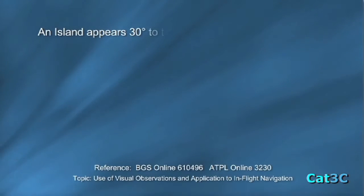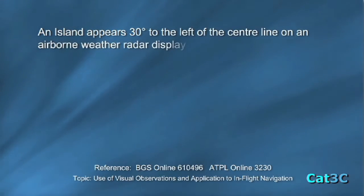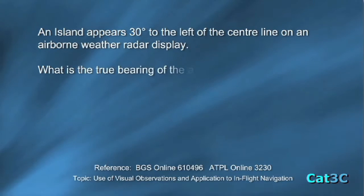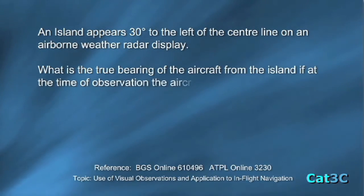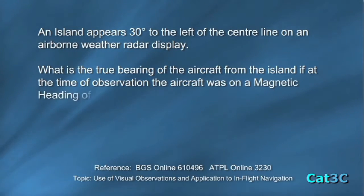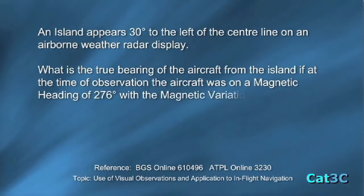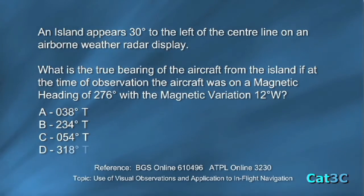An island appears 30 degrees to the left of the centre line on an airborne weather radar display. What is the true bearing of the aircraft from the island if at the time of observation, the aircraft was on a magnetic heading of 276 degrees magnetic, with a magnetic variation 12 degrees west? A, 038 degrees true. B, 234 degrees true. C, 054 degrees true. Or D, 318 degrees true.